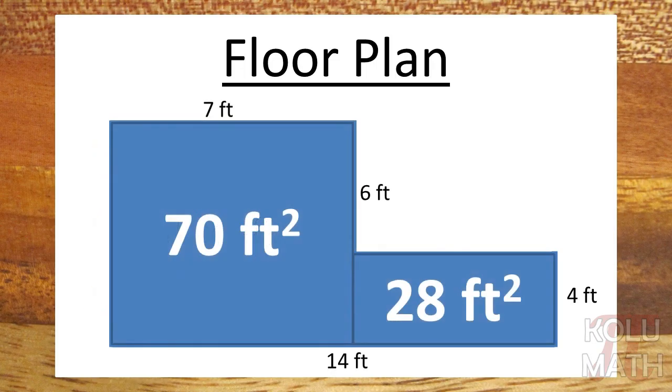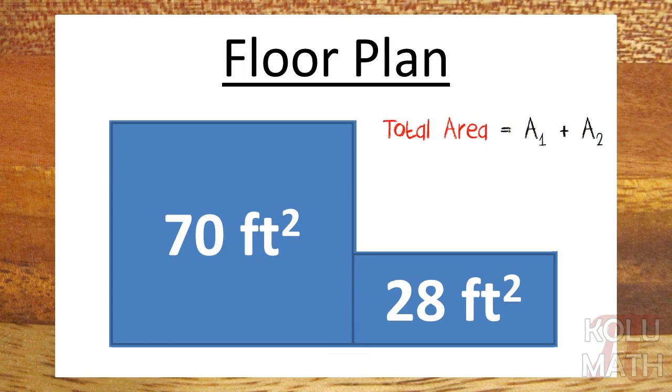Okay, so we've got 70 square feet on the left and 28 square feet on the right. Let's go ahead and add those together and find the total area. That gives us 98 feet squared.